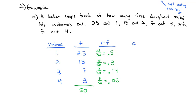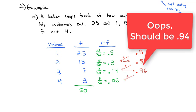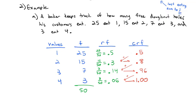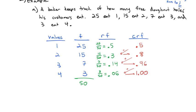And then once we have our relative frequency, we can find the cumulative relative frequency by adding all the values before that. So for one, we only have the 0.5. But then for two, we're going to add 0.3. So we add 0.3 to get 0.8. And then we add the next value, add 0.14 to get 0.96. And then we add 0.06 to get 1.00. And that fills in our frequency table.